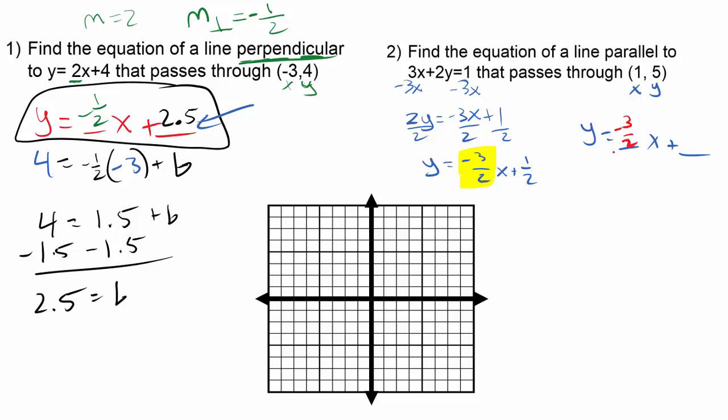If it was perpendicular, I'd have to flip it and switch the signs. I'd have to take the opposite reciprocal, which would be 2 thirds. But since it's parallel, the slope should be the same.